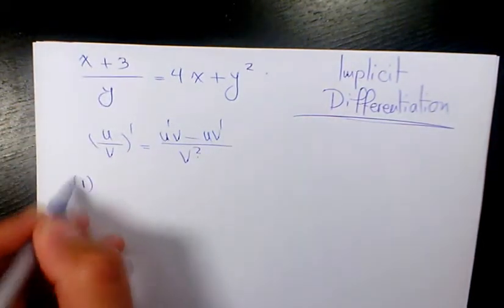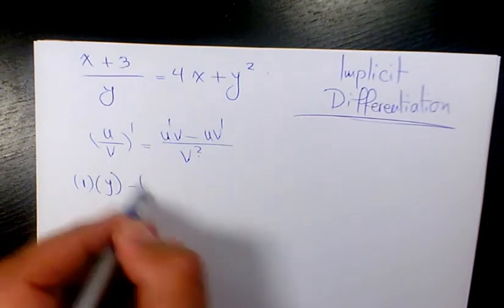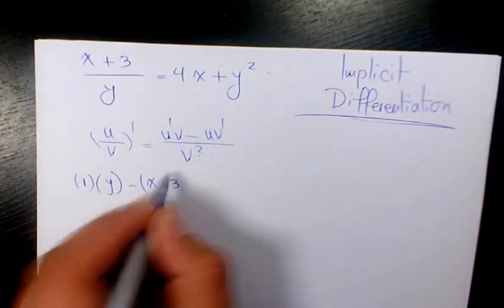Minus derivative of... it's going to be the numerator times derivative of the denominator, which is dy/dx...